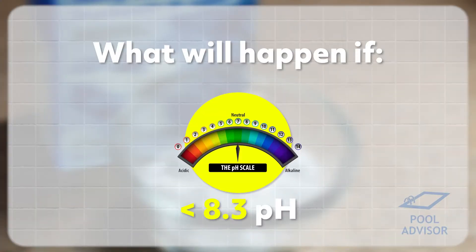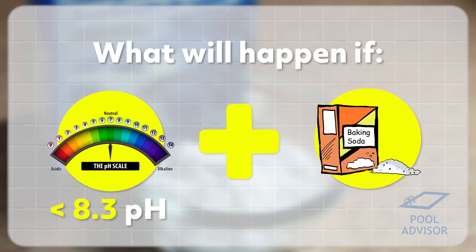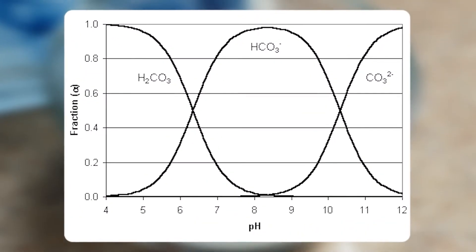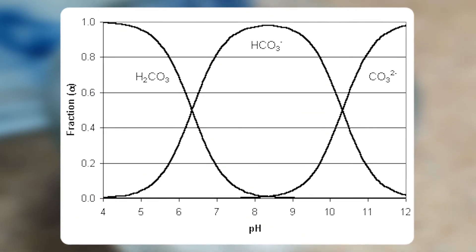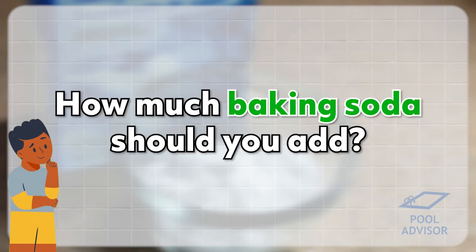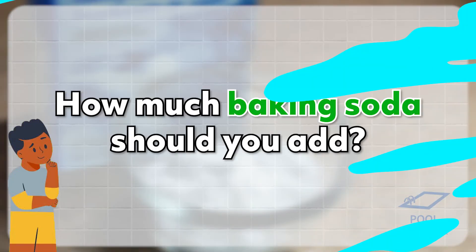For most people, if your pH is about 7.5 or so — in the sevens — and you add baking soda, you'll see a very small increase in your pH but still a nice increase in your alkalinity. So it's a very useful chemical for that reason. So how much baking soda should you add to your pool?